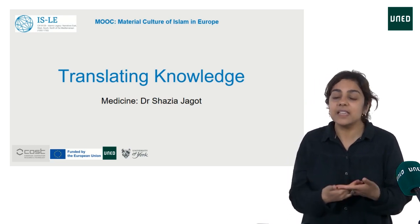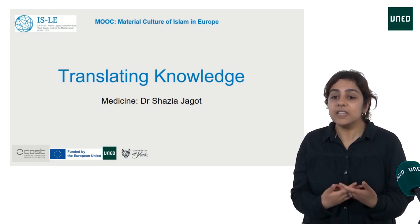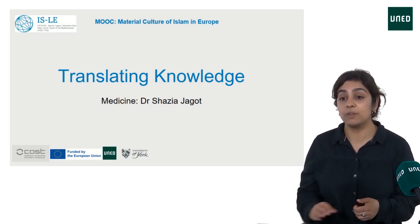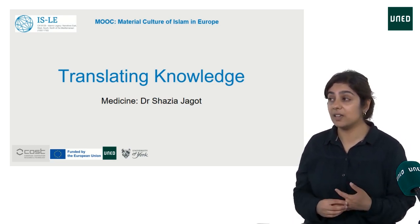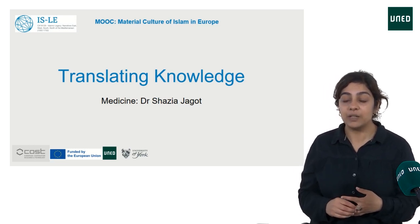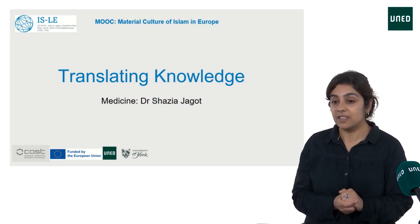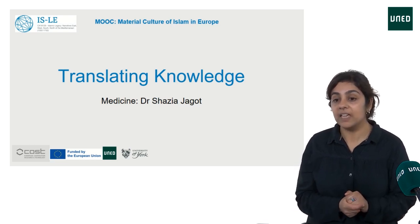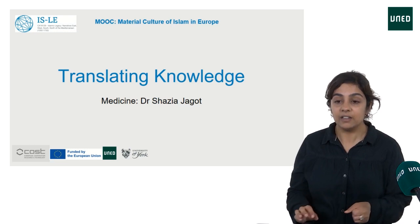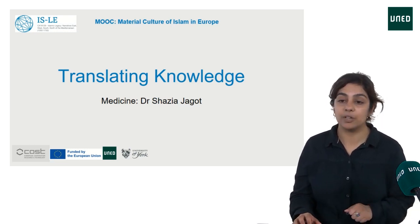These encyclopedias were well known in the medieval Islamic world, but the encyclopedia that gained perhaps the most fame and was most widely utilised in the medieval West was one by Abu Ali Husayn ibn Abdullah ibn Sina, who died in 1037. His Qanun Fi Al-Tib — his Canon of Medicine — was translated into Latin as the Liber Canonis.